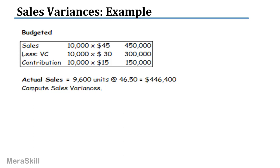Suppose budgeted sales is 10,000 units at 45, variable cost was 30, therefore contribution is 15 — so 450,000 less 300,000 gives margin of 150,000. That was the budgeted position. Actually, you sold only 9,600 units at a rate of 46.50. The budgeted selling price was 45. What are your sales variances? Try to work it out on your own.